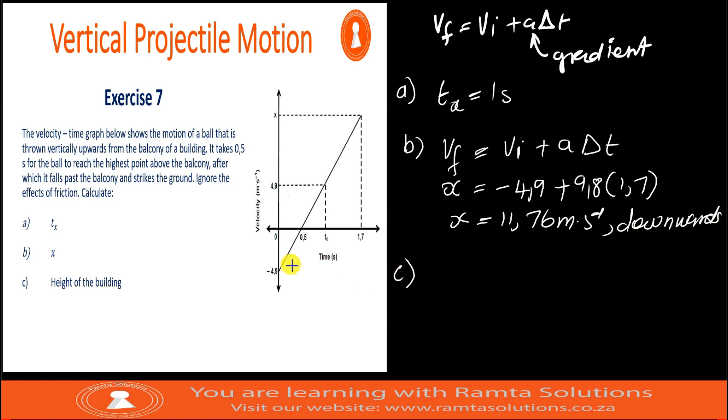Number C says calculate the height of the building. You can use equations of motion to calculate the height of the building or you can use the area of the graphs or the area under the graphs. Option one, let me use area under the graph. I will use area under the graph.